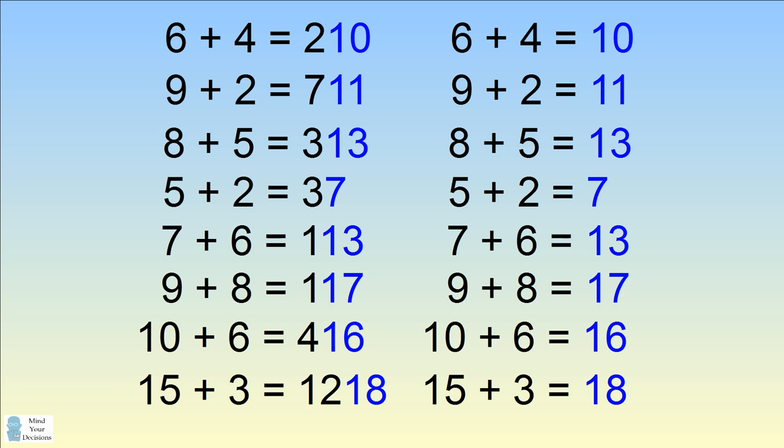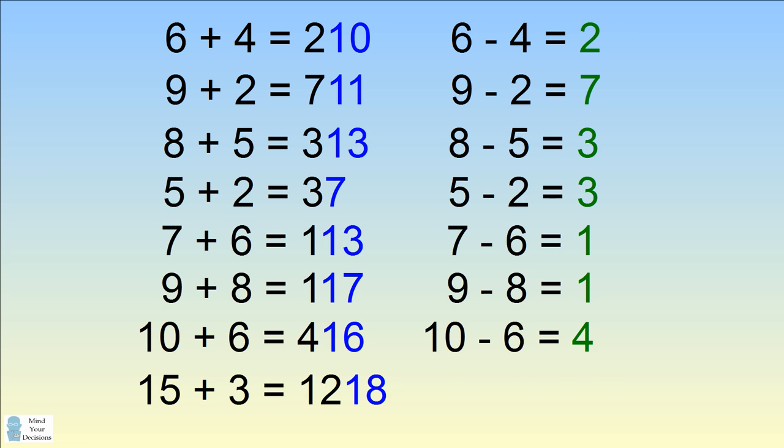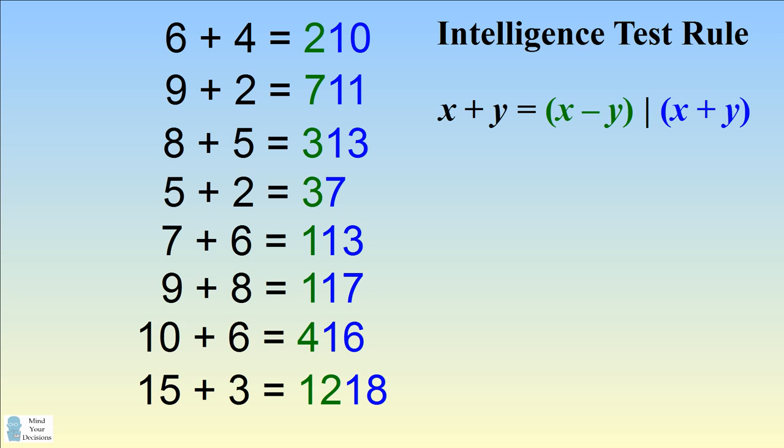Now we need to figure out where the first number or the first two numbers of our answer come from. Well, we can do the other operation. We can just subtract the numbers and we'll quickly see this is where the first number or the first two numbers come from. So we figured out the intelligence rule. We want to add, combine two numbers x and y, we'll take the difference of the two numbers and then append it to the sum of the two numbers.